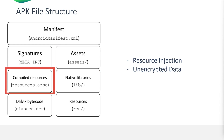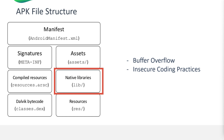Next are compiled resources. The resources.arsc file contains compiled XML resources like strings, styles, and layouts that the application uses. Check for resource injection vulnerabilities in resource handling that could lead to resource injection attacks, and ensure sensitive information is not hard-coded in resource files. For native libraries in the lib folder, these are libraries written in C or C++ compiled for different hardware architectures. Analyze native libraries for common vulnerabilities like buffer overflow, which could lead to arbitrary code execution. Review native code for insecure coding practices and ensure proper validation and sanitization of input.